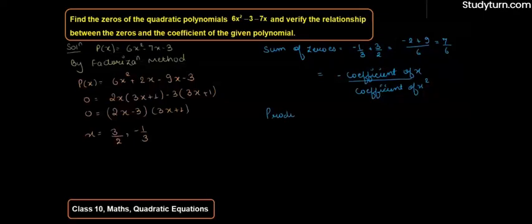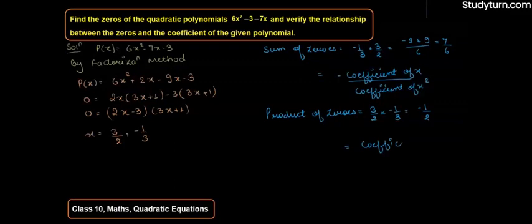Now we find the product of zeros. Product of zeros क्या होगा: (3/2) × (-1/3), which is equal to -1/2. And product of zeros किसके equal होता है — it equals the constant term upon coefficient of x².